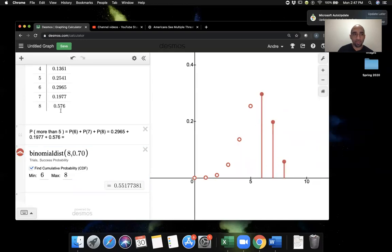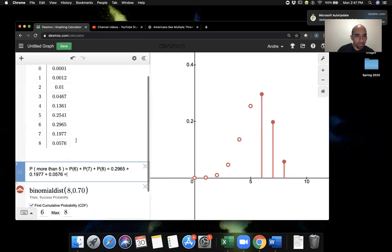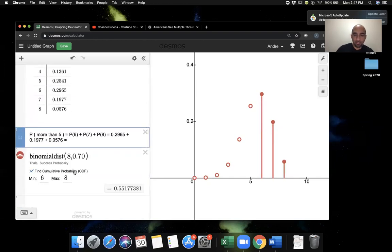And you can see here, that's basically instructing Desmos to add the probabilities corresponding to the outcomes six, seven, and eight. And when you add up these three probabilities for the outcome six, seven, and eight, we end up getting 0.552. Actually, let me fix it. This should be 0.0576. No wonder it didn't look right. So 0.2965, 0.1977, plus 0.0576, we get a sum of the three probabilities of 0.552.